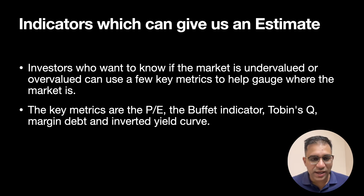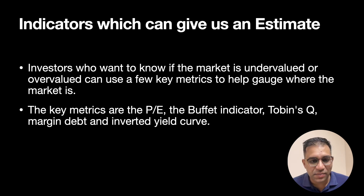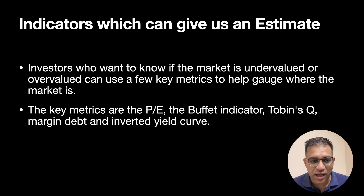Let's look at the indicators which can help us estimate whether the current state of the stock market is bullish or bearish, overvalued or undervalued. We are going to use two indicators: the PE ratio and the Buffett indicator, to make a judgment about the state of the Indian stock market as of today.